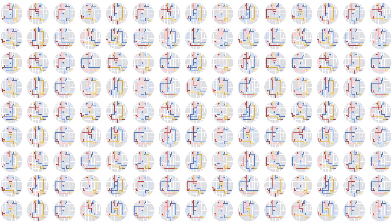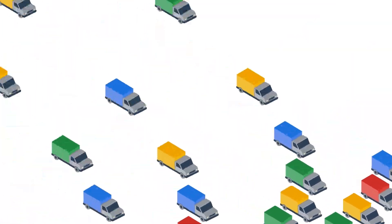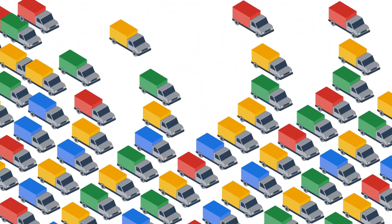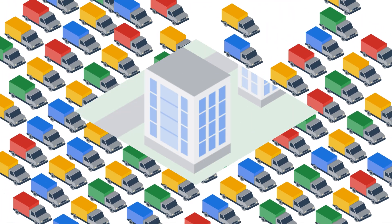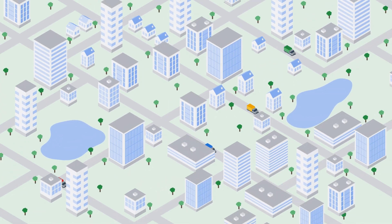With just 10 stops, there are already over 3 million possible routes passing through all the stops. In the real world, businesses have tens or even hundreds of vehicles and thousands or tens of thousands of stops to make.